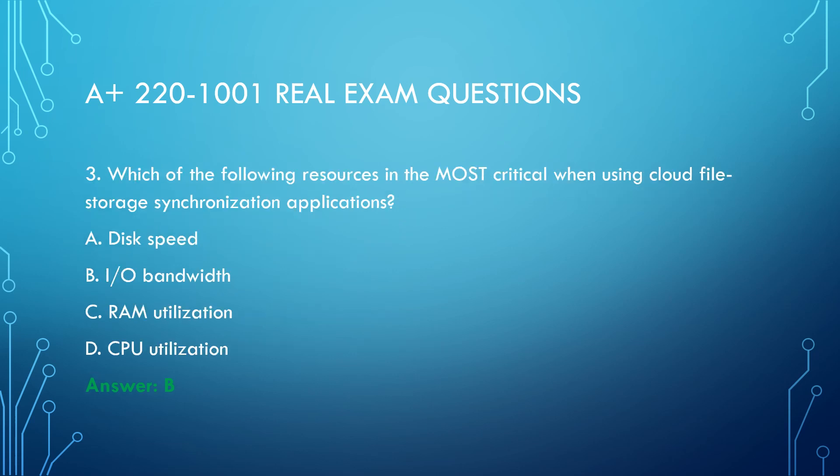Question 3. Which of the following is considered government-regulated data? A. PII. B. End-user license agreement. C. Digital Millennium Copyright Act. D. DRM. Answer: A.